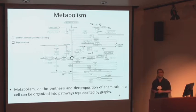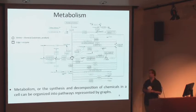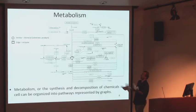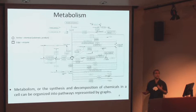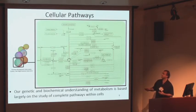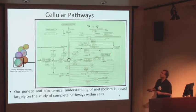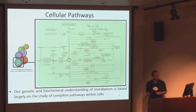Here is a map of metabolism. We think about metabolism as the synthesis or decomposition of chemicals in a cell that can be organized in pathways represented by graphs. Here is a KEGG pathway. We have a vertex, which is a chemical substrate or product, and we have an edge, which is an enzyme — nodes and edges. Most of what we know about metabolism comes from studies of single cells, because we can perturb those cells and do experimentation. So we have a pathway derived from a single cell, and our genetic and biochemical understanding of that pathway is derived from studies at the single-cell level.